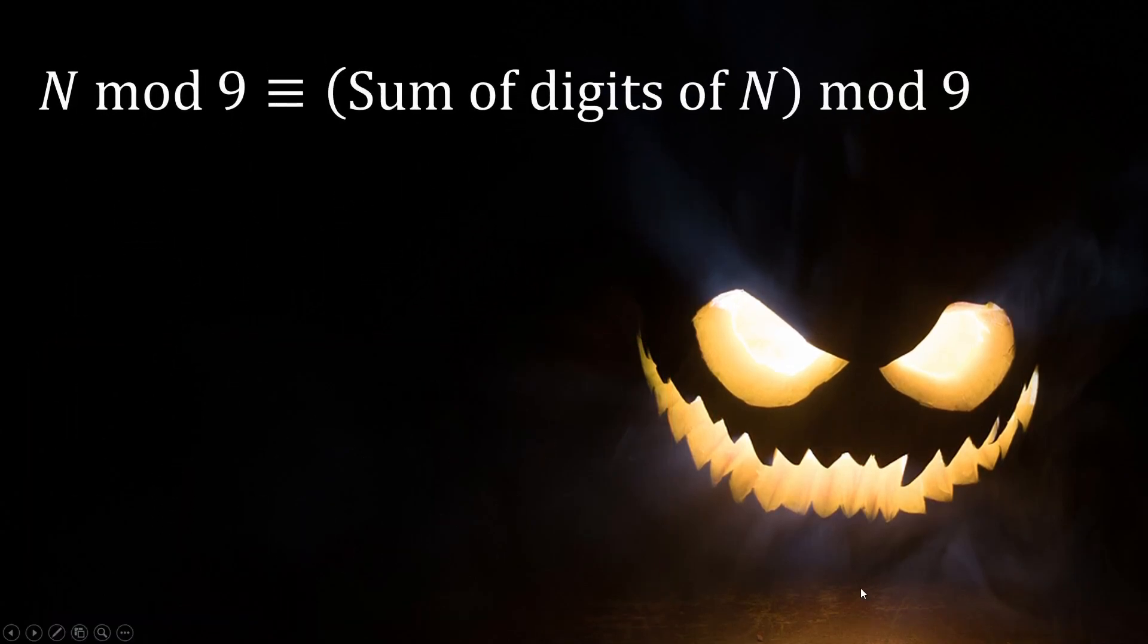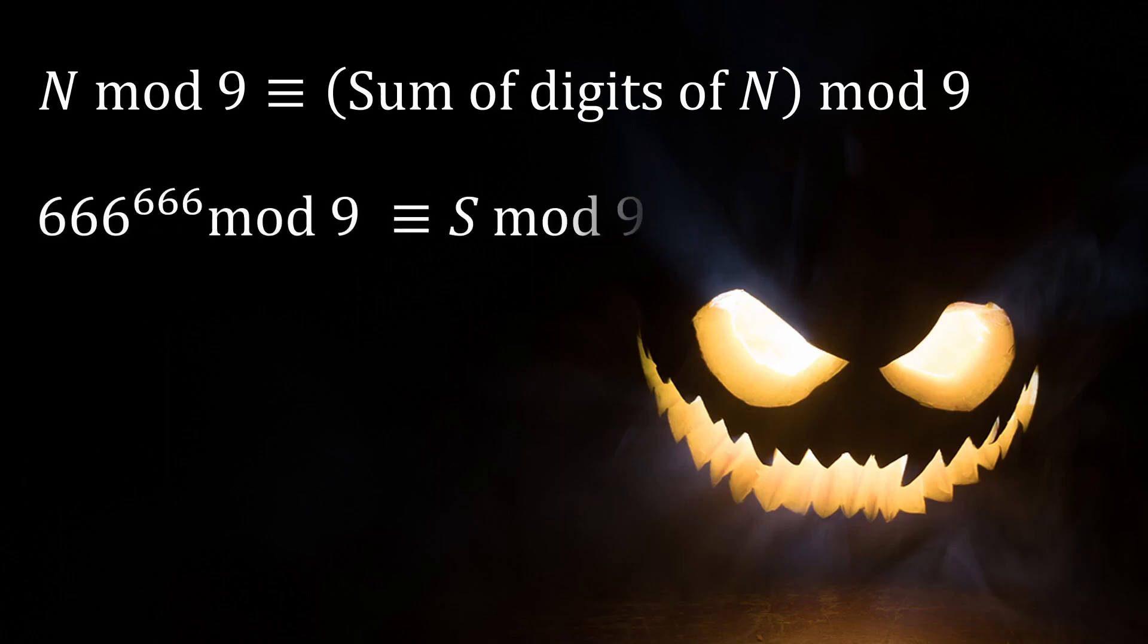We'll use a math trick for solving number theory problems. Any number N modulo 9 is congruent to the sum of the digits of N modulo 9. That means if a number is divided by 9 you get the same remainder when the sum of the digits of that same number is divisible by 9.